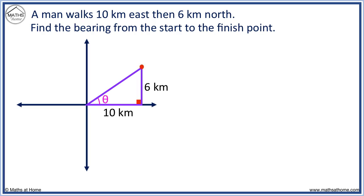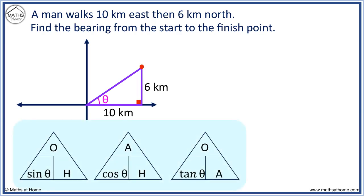We can work out the angle of a right-angle triangle using trigonometry. 6 kilometers is the opposite side, and 10 kilometers is the adjacent side. This triangle contains O and A, so we use this. We find tan θ by covering up tan θ on the triangle. We have O over A.